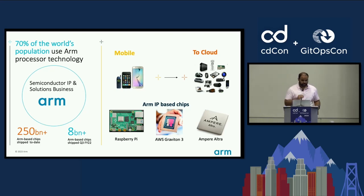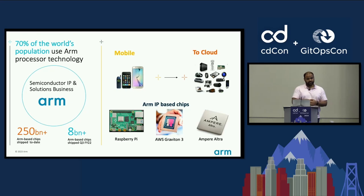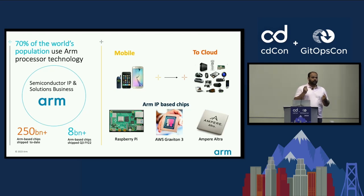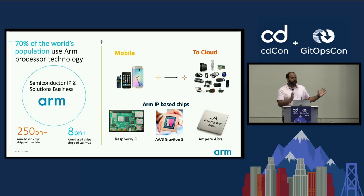The ARM architecture differs from x86 or Intel. x86 is based on a complex instruction set or CISC, while ARM is based on a reduced instruction set. Just to give some context: you can't run an application built for x86 directly on an ARM-based platform — though there are caveats we'll talk about later. The architecture is fundamentally different from a traditional x86 or AMD64 architecture.